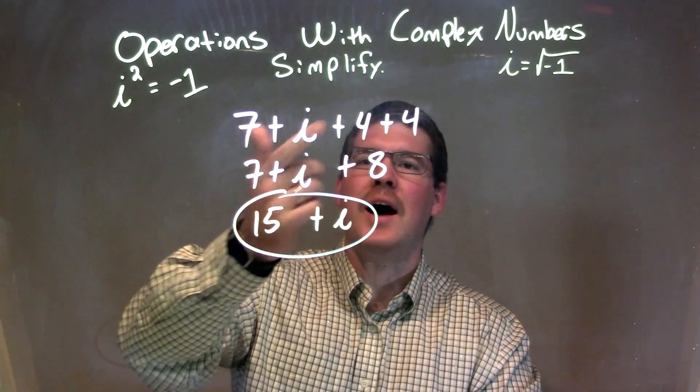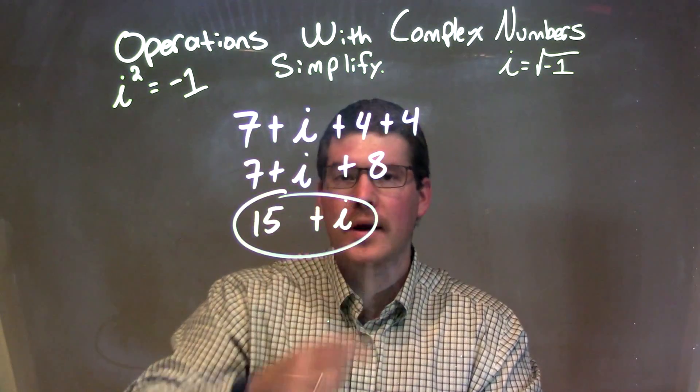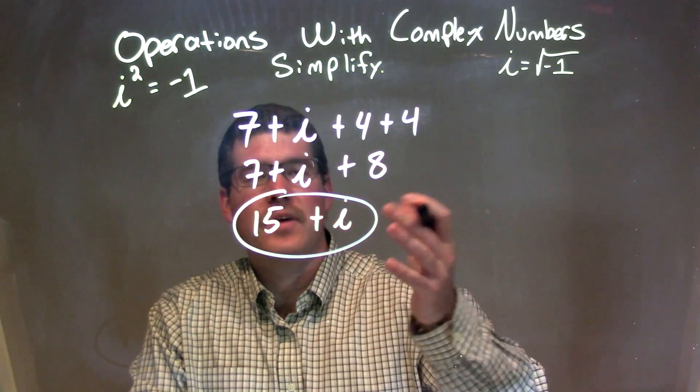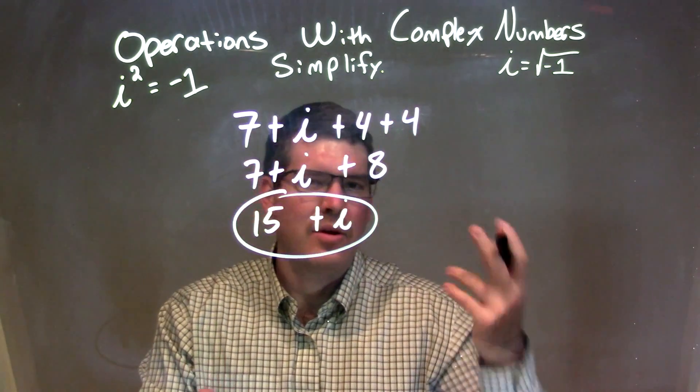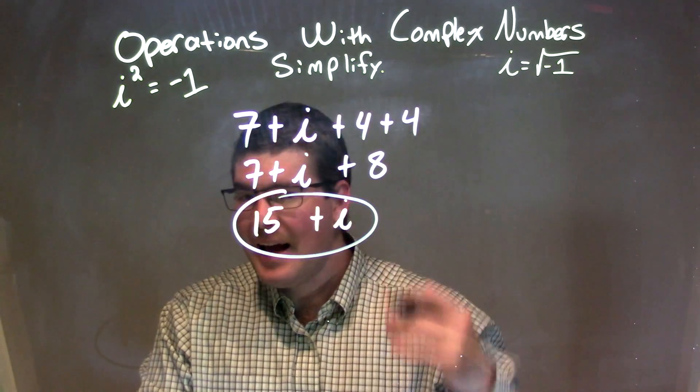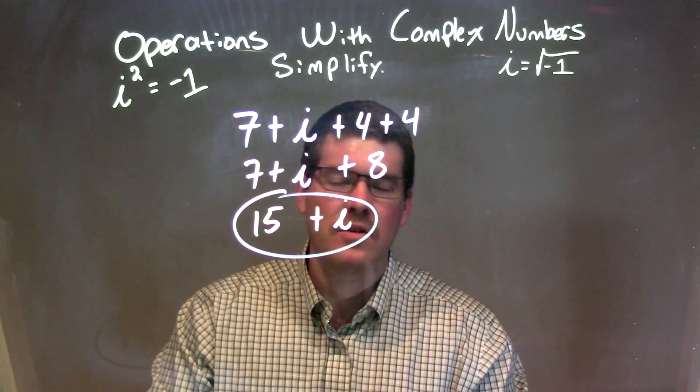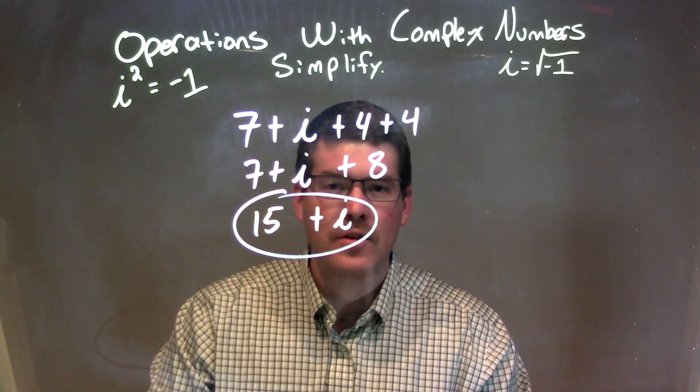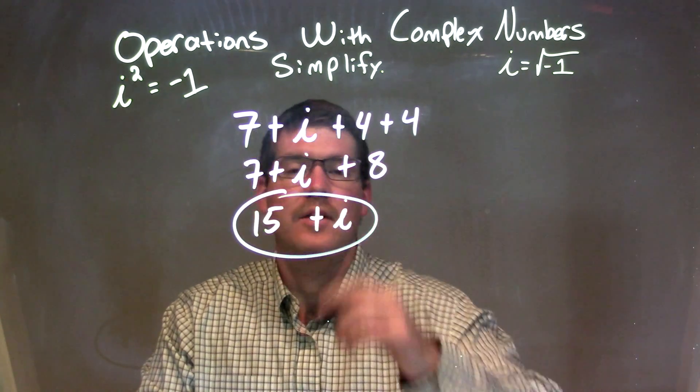Let's recap. We're given 7 plus i plus 4 plus 4, and we want to combine or simplify this by combining our like numbers. 4 plus 4 is 8, and then we combine 8 and 7 to get 15. i had nothing else I could combine with, so we're left with the final answer of 15 plus i. We'll see you in the next one.